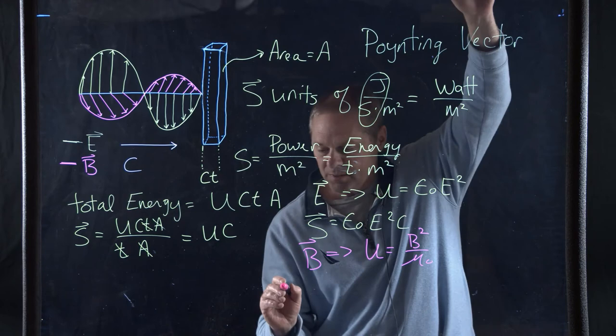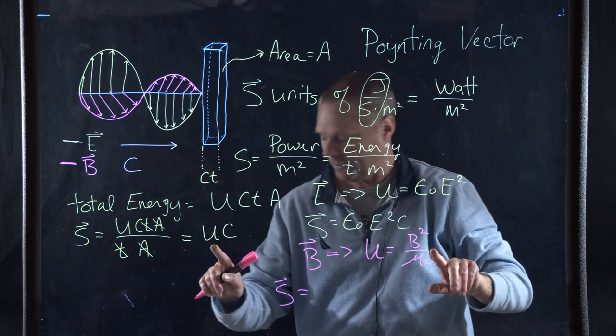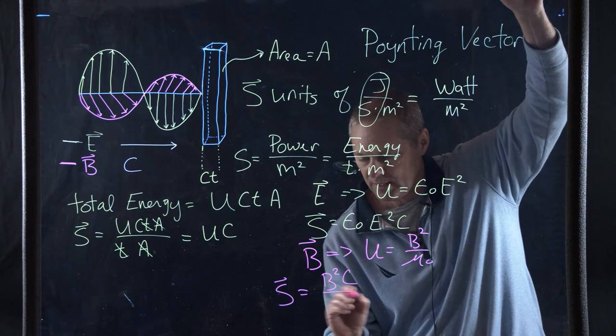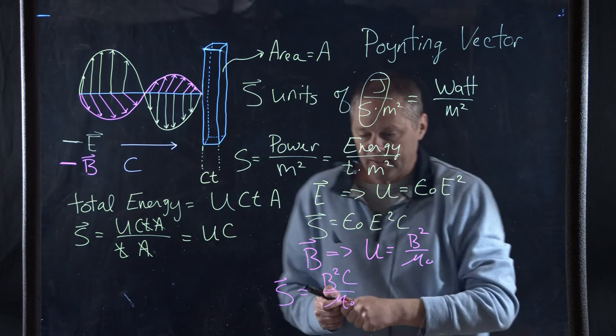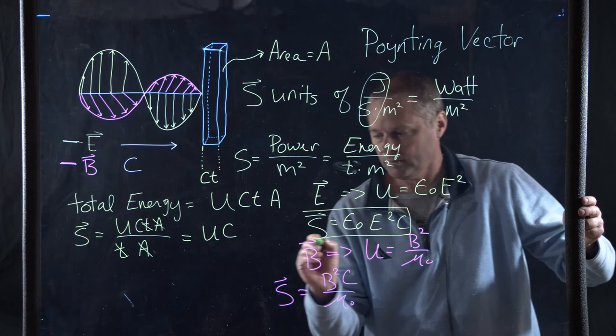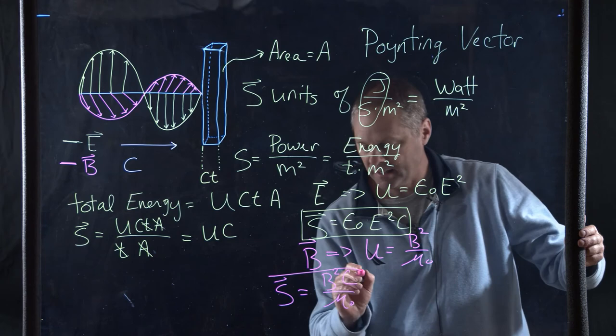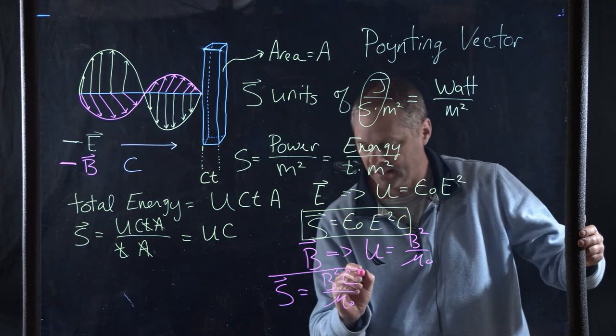our Poynting vector for the magnetic field is going to be our U, which we have here, times our C. So this becomes B squared C upon mu naught. So we can find the intensity of the electric field by that equation there, and we can find the intensity of the magnetic field as B squared C upon mu naught.